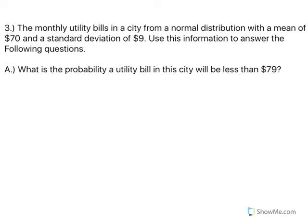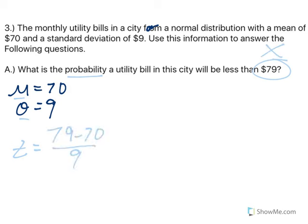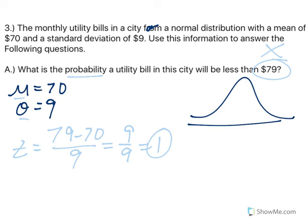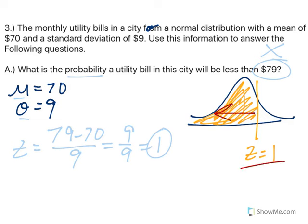Number 3: the monthly utility bill in a city forms a normal distribution with a mean of 70 and a standard deviation of 9. What is the probability a utility bill will be less than $79? We need to find a z-score first. z equals value minus the mean over the standard deviation: 79 minus 70 is 9, and 9 over 9 gives a z-score of 1. A positive z-score is to the right of the mean. Probability less than that means area to the left, so looking in the table at z equals 1 gives 0.8413, which is my probability — about 84%.